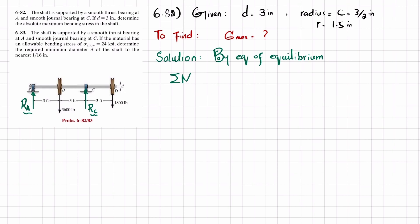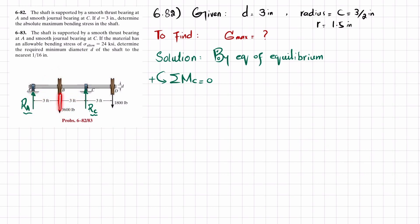We will take the first equilibrium condition: the sum of all moments about point C equals zero, taking counterclockwise as positive. About point C, one moment is Ra times six feet (clockwise, so negative). The second moment is 3600 times three feet (counterclockwise, positive). The third moment about point D is 1800 times three feet.